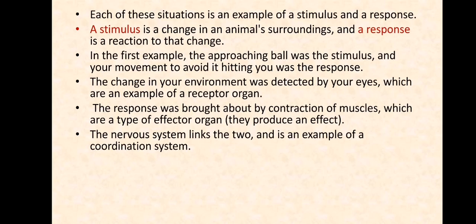A stimulus is a change in an animal's surroundings or environment, and a response is a reaction to that change. In the first example, the approaching ball was the stimulus and your movement to avoid it was the response. The change in your environment was detected by your eyes, which are an example of a receptor, and the response was brought about by coordination of muscles, which are a type of effector organ. The nervous system links these and is an example of a coordination system.